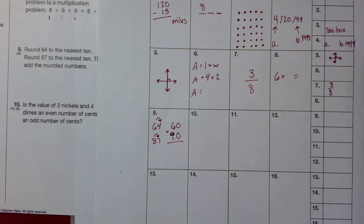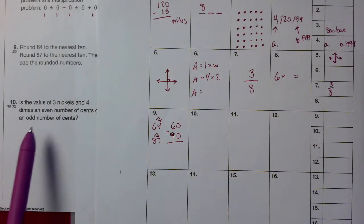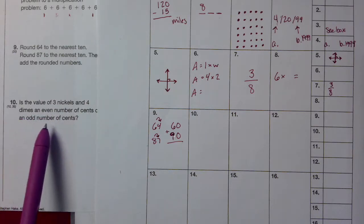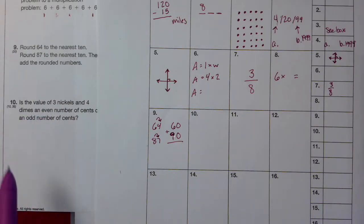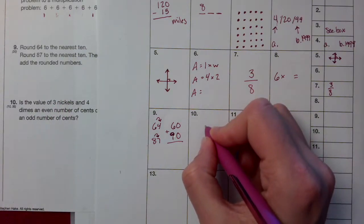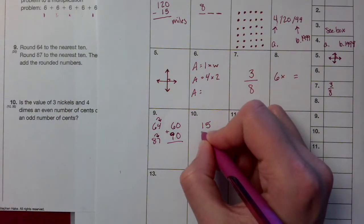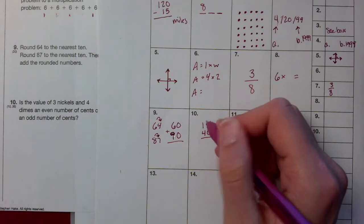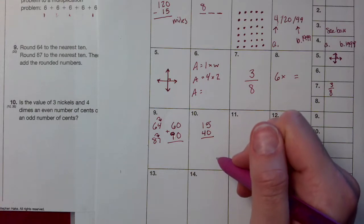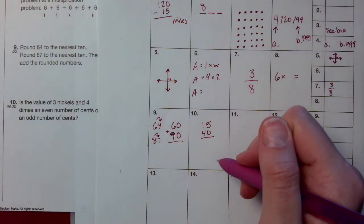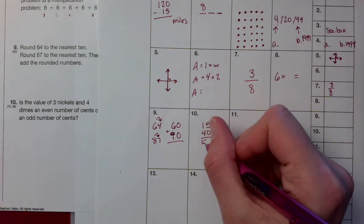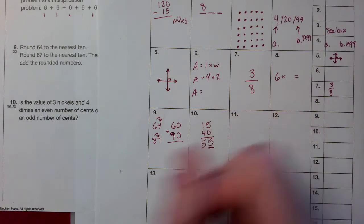Number 10. Is the value of 3 nickels, 4 dimes, an even number of cents or an odd number of cents? So 3 nickels, which is 15 cents, and 4 dimes, which is 40 cents. Is that even or odd? Even or odd, the whole number.